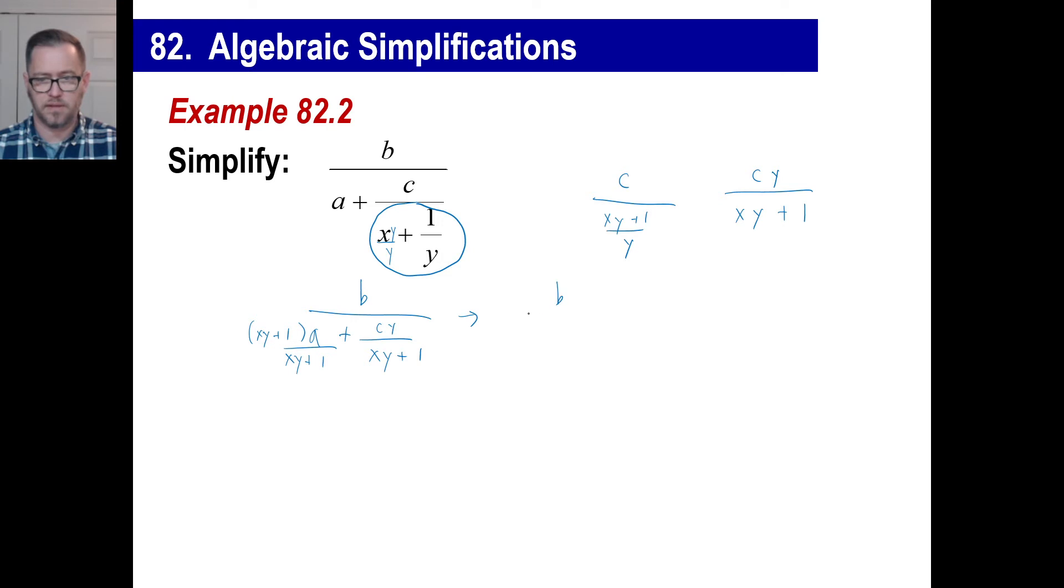So we have, let's go ahead and write the b again. And we have, we'll call it A, xy plus a plus cy. It's all going to be over xy plus 1. And here's the bottom fraction you're dividing by. And of course, we'll flip and we'll multiply again. So we have b times xy plus 1 over Axy plus a plus cy.